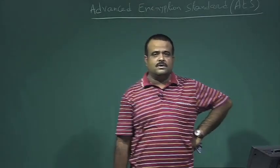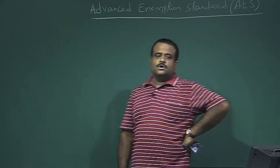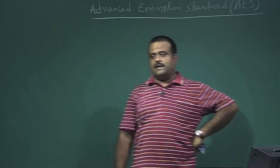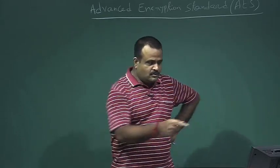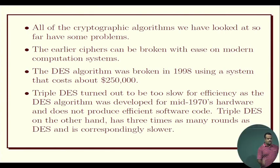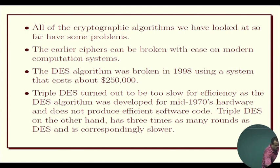We will talk about another block cipher called the Advanced Encryption Standard, or AES. So far, all the cryptography algorithms we have looked at have some problems. We have seen classical cryptosystems like various ciphers — those are earlier ciphers and are broken under modern computer speeds. We have also looked at DES, which is also broken.